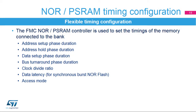The NOR PSRAM controller allows the configuration of various timing parameters for the supported memories: address setup phase, duration of the first access phase; address hold phase, duration of the middle phase of the access cycle; data setup phase, duration of the second access phase; bus turnaround phase duration; clock divide ratio, which is the number of AHB clock cycles (HCLK) within one memory clock cycle (CLK); and data latency, the number of clock cycles to be issued to the memory before the first data transfer.